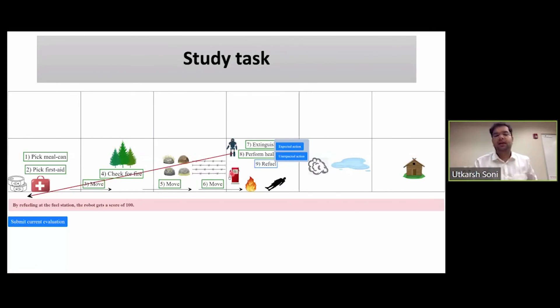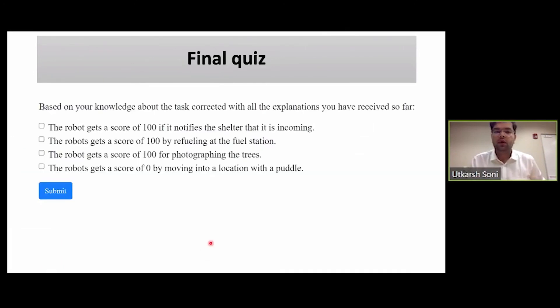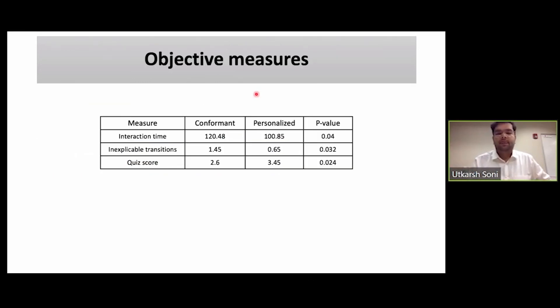Then we actually made them do the actual study task, where again, at each step, they were shown some transition and they had to mark it as expected or unexpected. Finally, we asked them to give a quiz, where we checked whether they remembered the updated model of the robot or not. The explanation updated their model and we checked whether they retained that knowledge. We compared conformant and personalized explanations on three dimensions: the total interaction time for the task, the total number of inexplicable transitions at the end of the task, and the final quiz score. In all cases, personalized explanations did outperform conformant explanations and the difference seemed to be statistically significant.